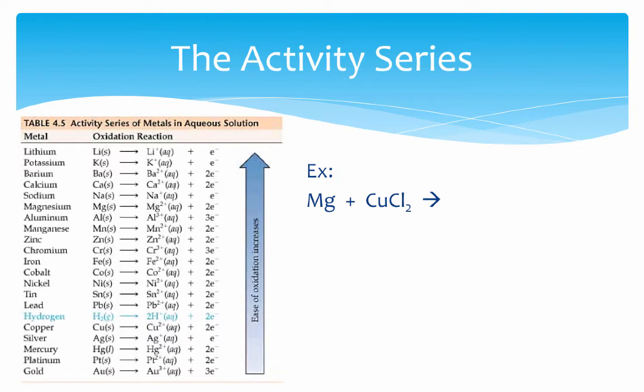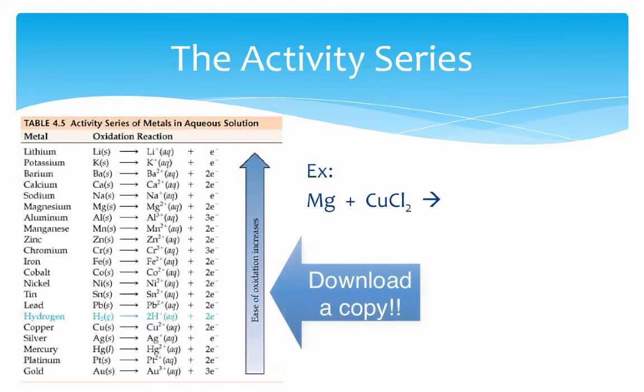So we're going to go through a couple examples just to show you how this works. Before we get into this, if it hasn't already been obvious, you're going to need a copy of this activity series table. There's a link down below at the bottom of the page where you can download this particular one. However, there are tons of these tables available online. Any one of those tables will get the job done. They all kind of work in the same kind of way. They all have very similar elements to the ones listed here.